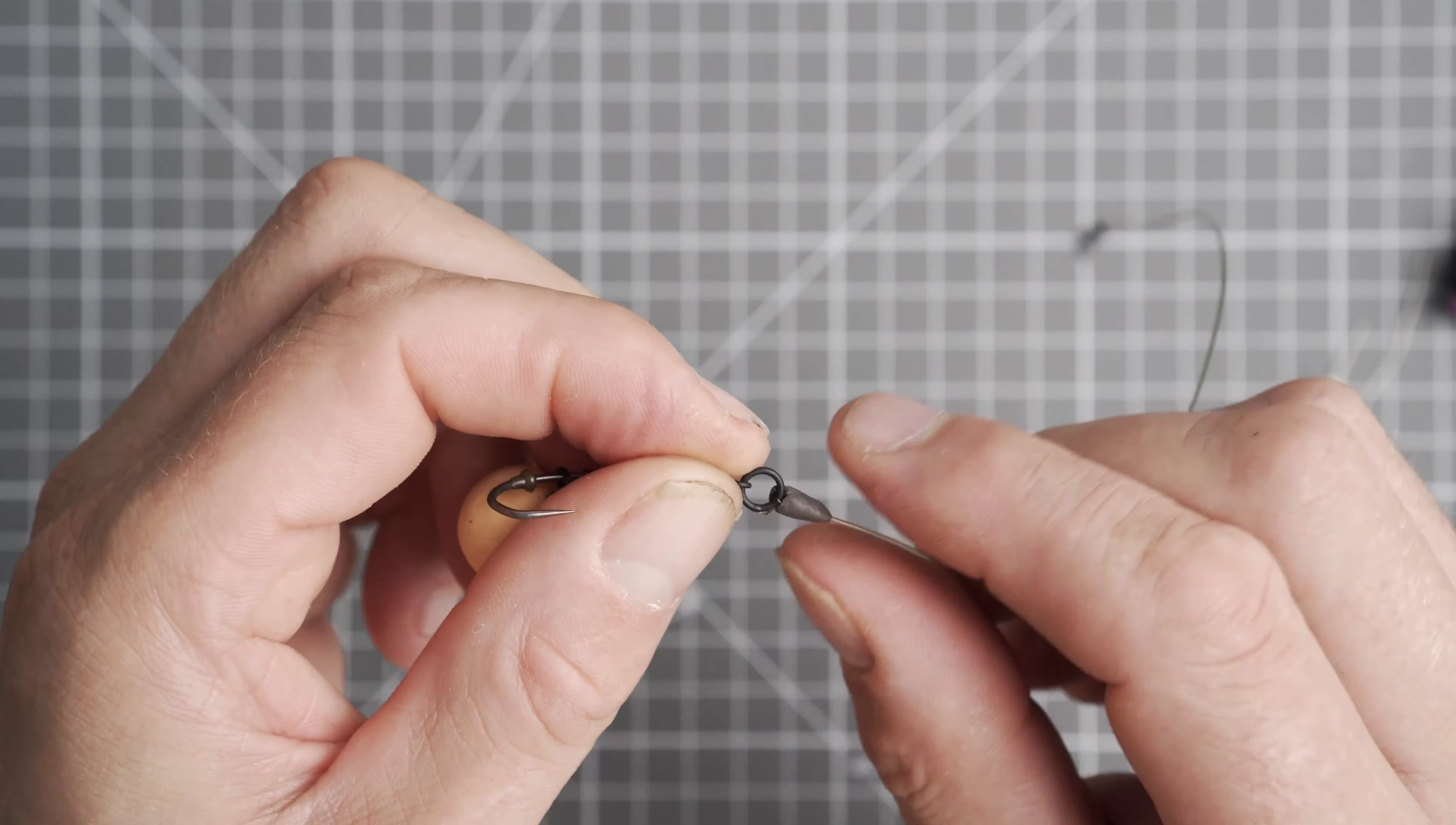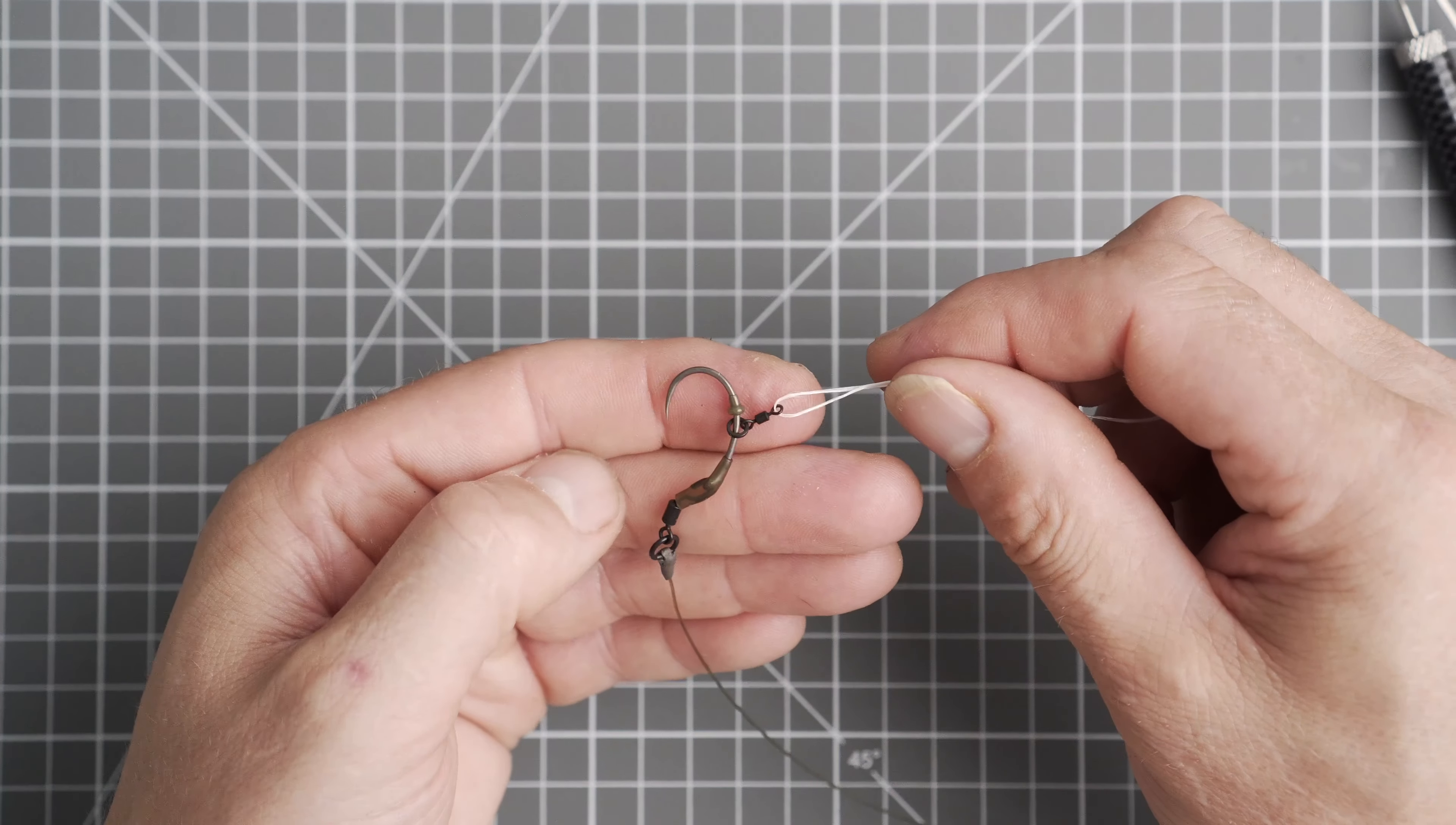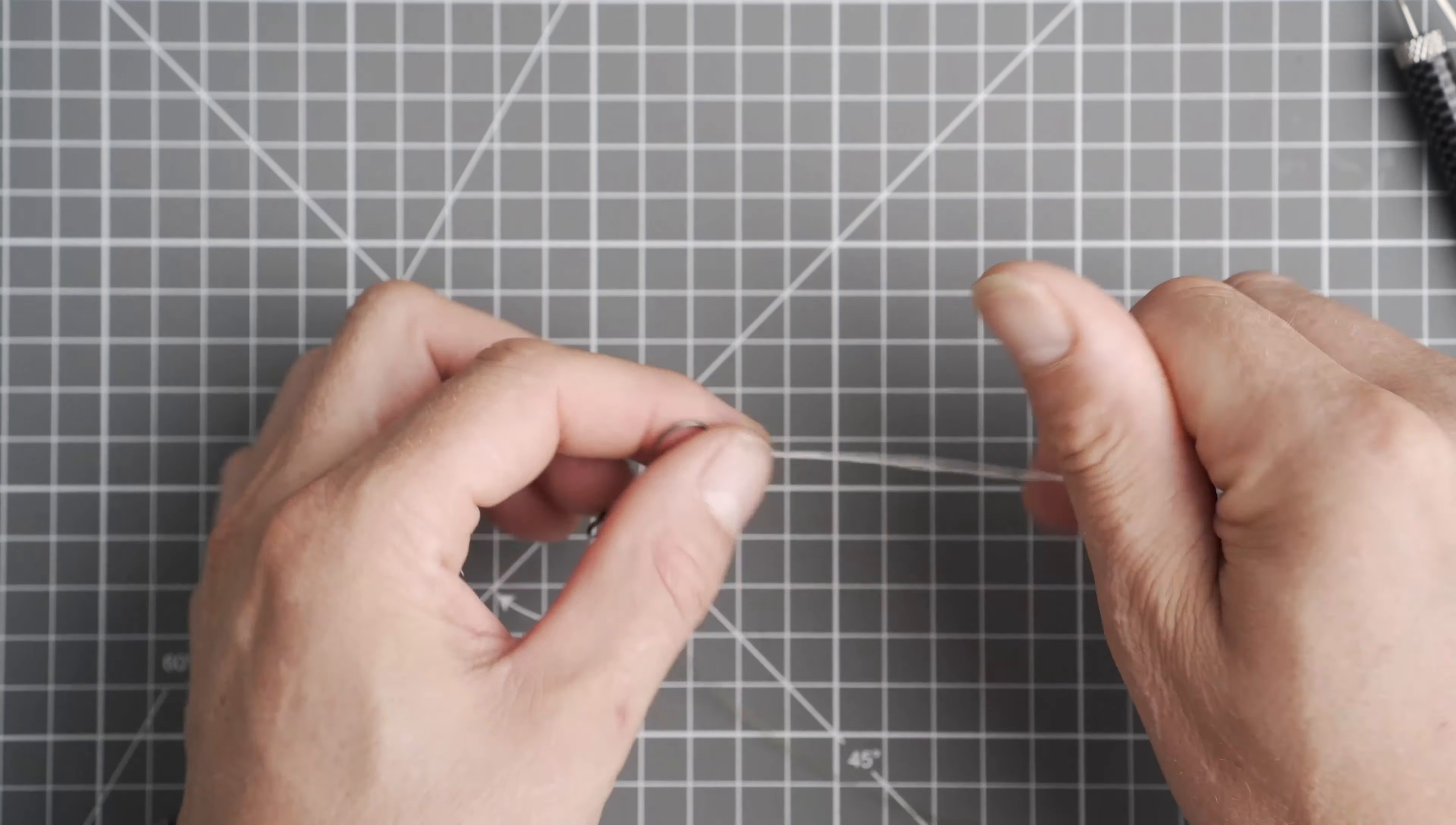I'm going to be using a very buoyant hook bait here. And as I'm using the ring swivel I'm going to attach it with some bait floss. Get the bait needle, obviously pierce the bait.